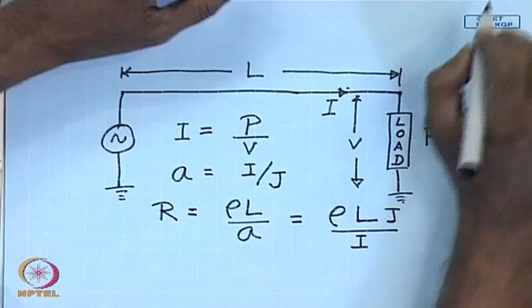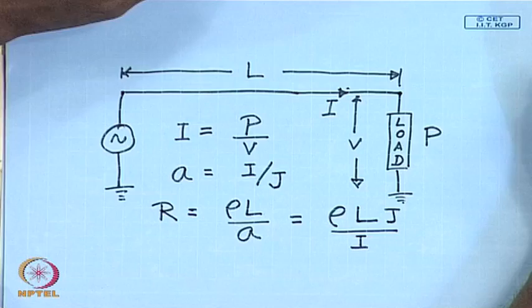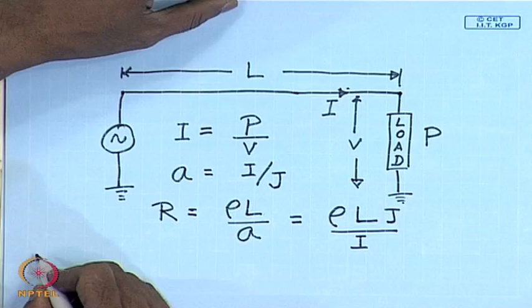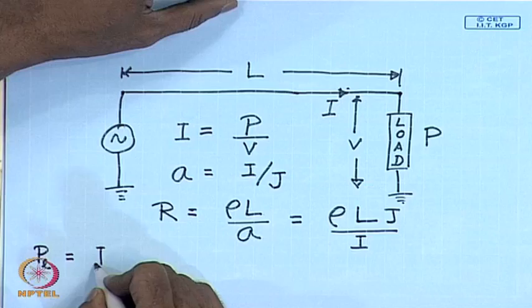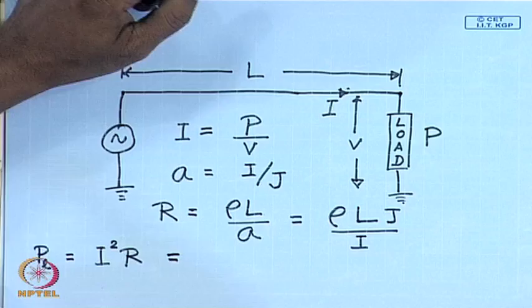Where rho is the resistivity of the transmission line material, L is the length, and A is the cross-sectional area. The total power loss in transmission, P_L, equals I squared times R. But I is given by P divided by V. Therefore, the power loss can be expressed in terms of P, V, and the line parameters.